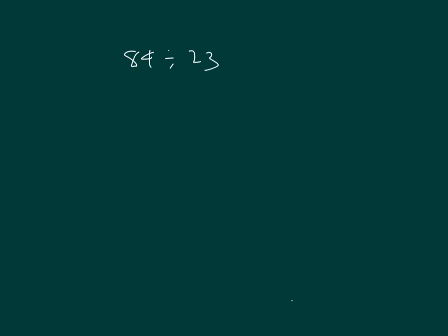Let's do an estimate first for this problem. 84 divided by 23. The divisor, we can estimate that as 20. And then, so that would be 80 divided by 20, which is 4. Let's try that into our standard algorithm. That's 84 divided by 23. You're trying 4.